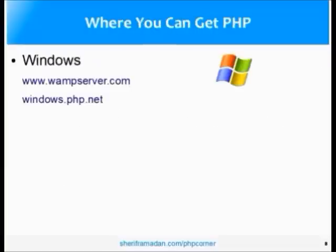So where can you get PHP? If you're on Windows, you can go directly to windows.php.net and download the Windows binaries compiled and available from php.net, or you can get a complete package with Apache, MySQL, and PHP binaries with an installer from wampserver.com. The source code is already available at php.net for everybody to download, and since Windows users likely won't find a free C compiler, the folks at php.net have compiled it using Visual Studio with a Visual C compiler and made it available online for free.